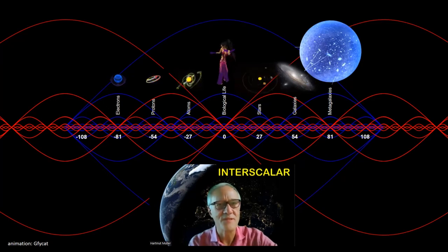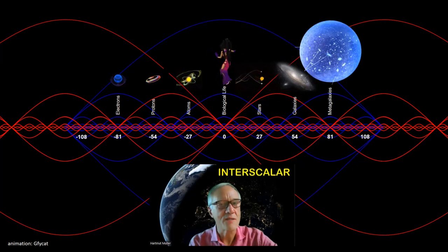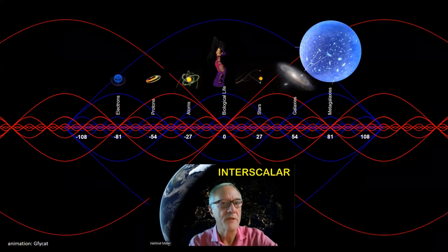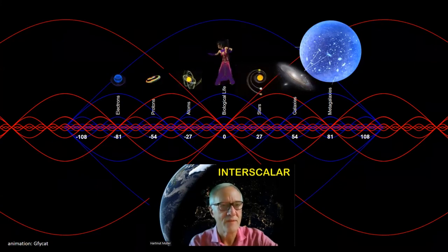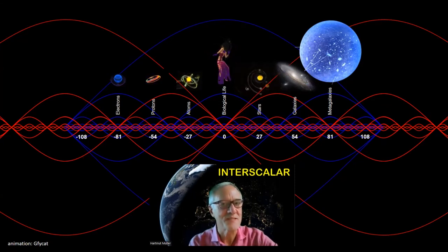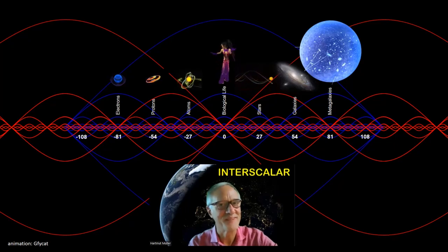The numbers on the logarithmic scale are powers of Euler's number. In this way, the Hindu number 108 gains a new sense. Biological life occupies the center of scale symmetry of the fundamental fractal. Thanks for watching.